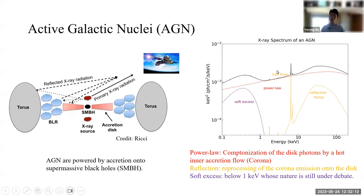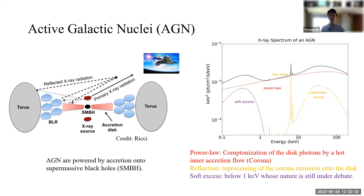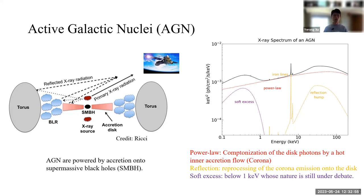A typical X-ray spectrum of AGN consists of a power-law component, a reflection component, and a soft excess. The power-law component results from the Comptonization of photons by the hot corona, and the reflection component is the reprocessing of the corona emission onto the accretion disk and further out. The prominent features of reflection are the strong iron K emission line and a reflection hump in the hard X-rays. There is also a soft excess component below 1 or 2 keV, whose nature is still debated, but we believe it comes from the inner region of the accretion disk.